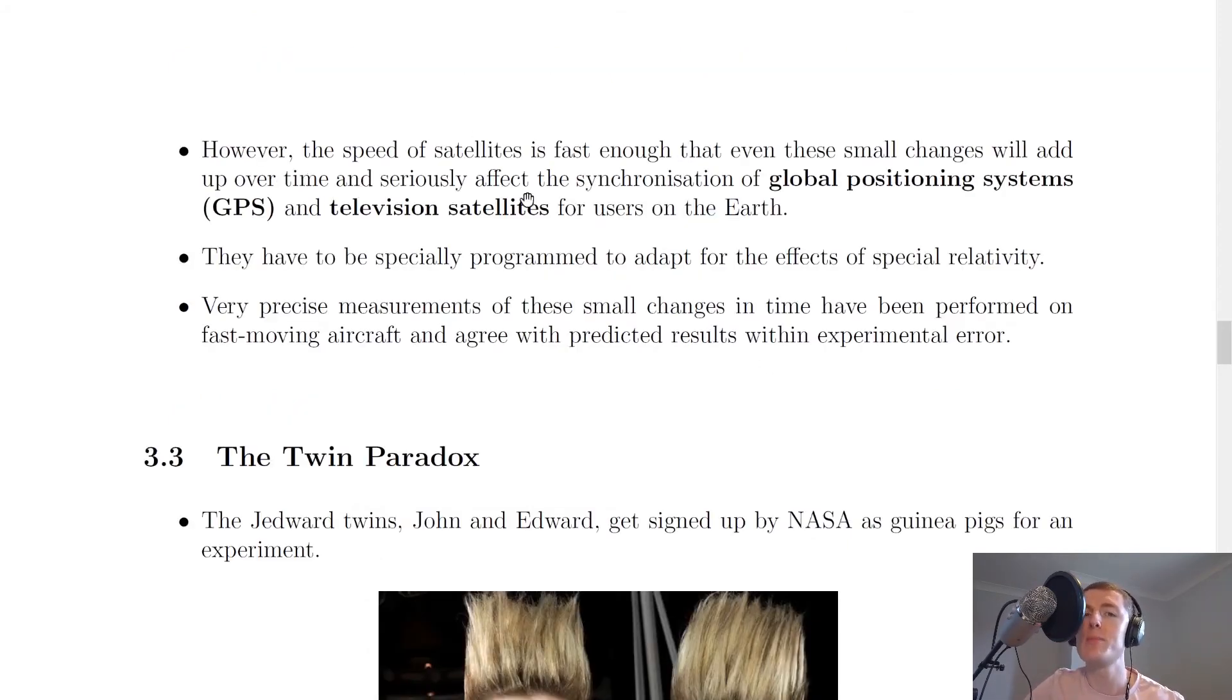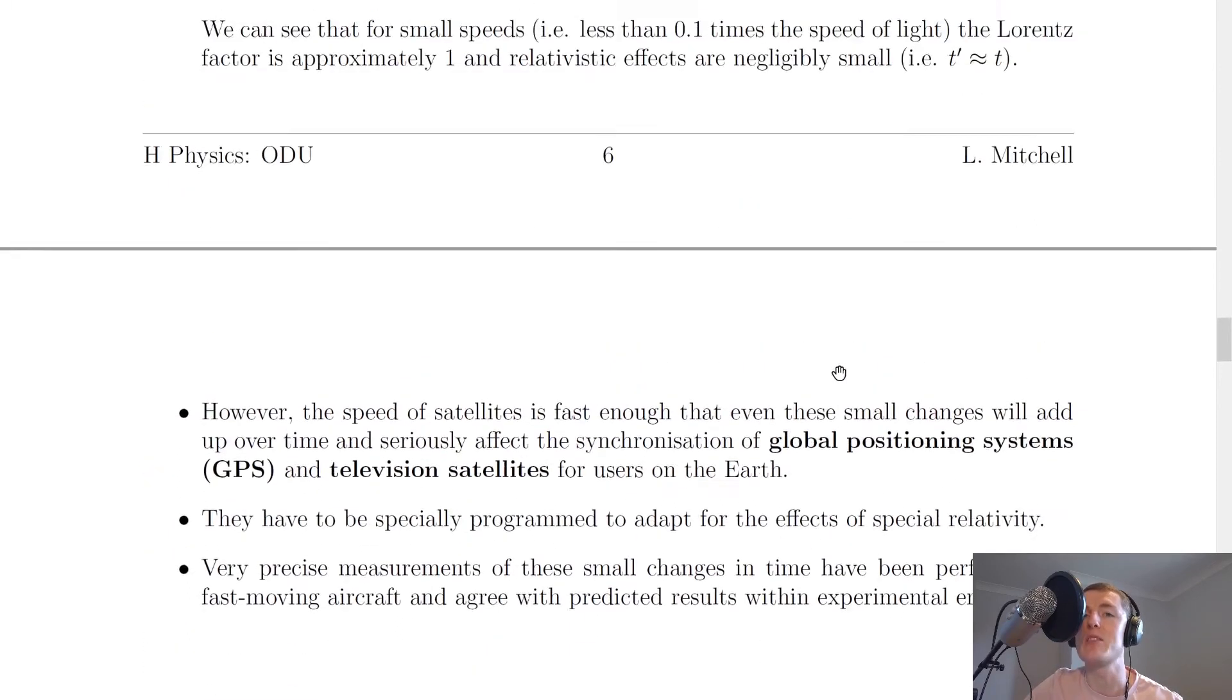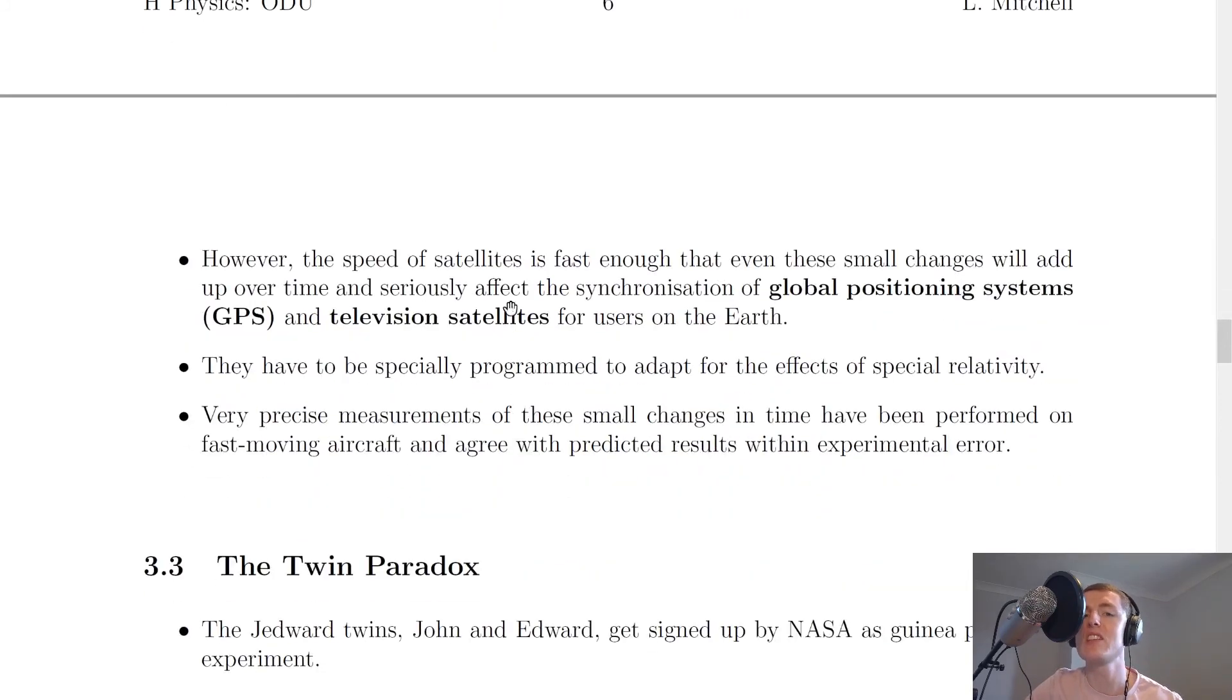It then says that however, the speed of satellites is fast enough that even these small changes will add up over time and seriously affect the synchronisation of global positioning systems, GPS, and television satellites for users on the Earth. These satellites therefore have to be specially programmed to adapt for the effects of special relativity, these effects of time dilation.